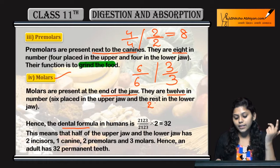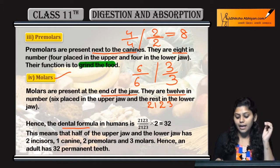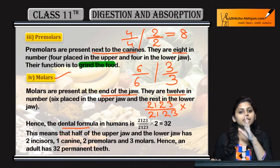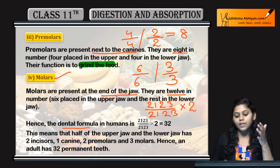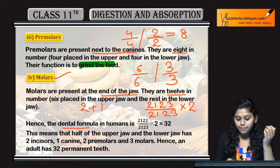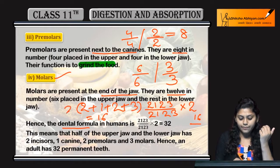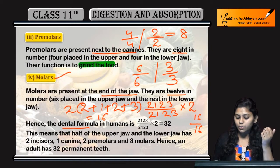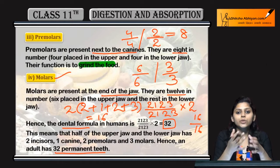So the dental formula for one side of the jaw is: 2 incisors, 1 canine, 2 premolars, and 3 molars — this is the upper jaw on one side, and the lower jaw on one side is also 2, 1, 2, 3. When we consider the full mouth, we multiply by 2. So 2 plus 1 plus 2 plus 3 equals 8, and 8 multiplied by 2 gives 16 on top and 16 below. 16 plus 16 equals 32. So the total number of permanent teeth in an adult human is 32.